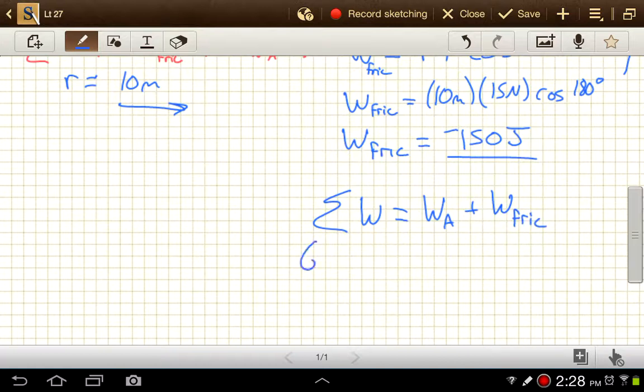In this case, the net work was 62.5 joules. Work done by A is unknown, plus the work done by friction is negative 150 joules. So we can calculate the work done by A, and that gets us 212.5 joules.